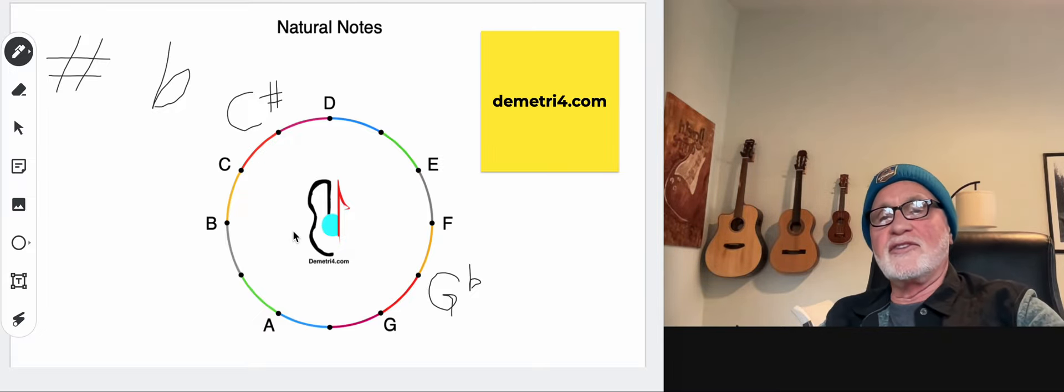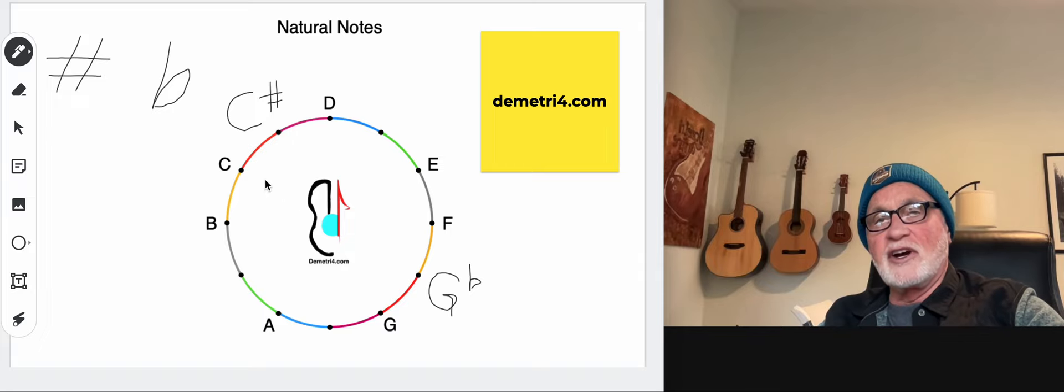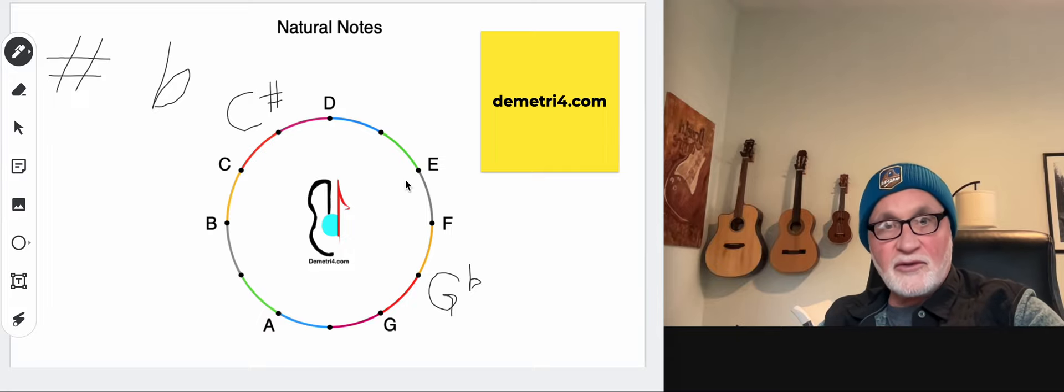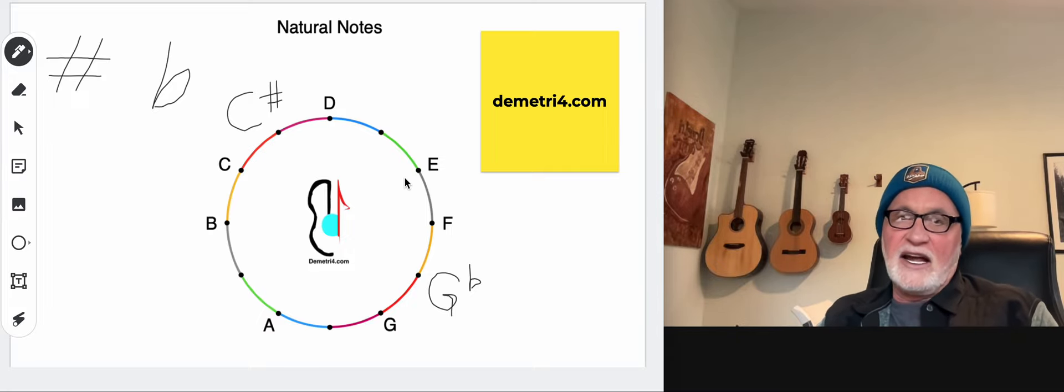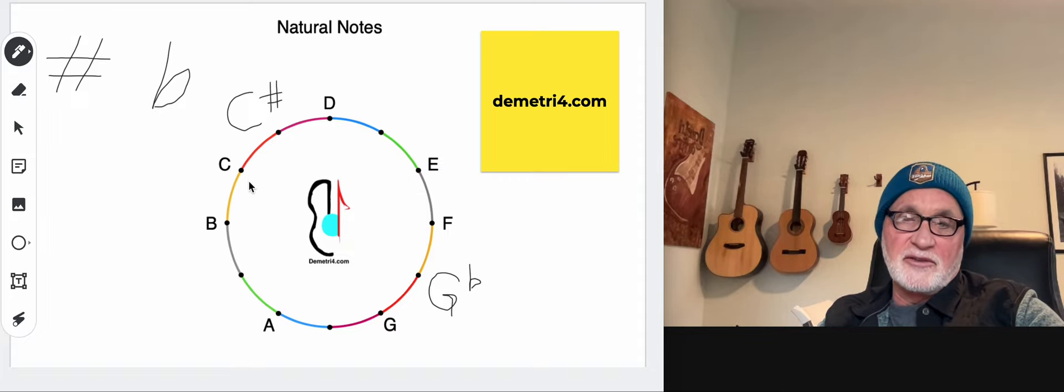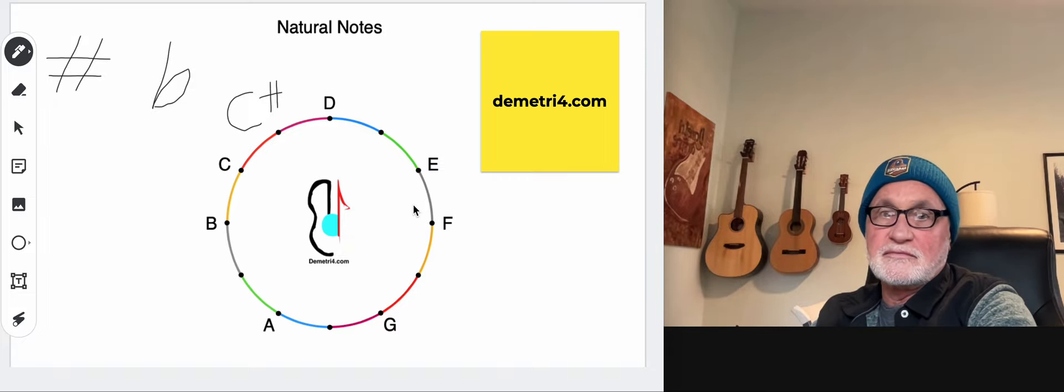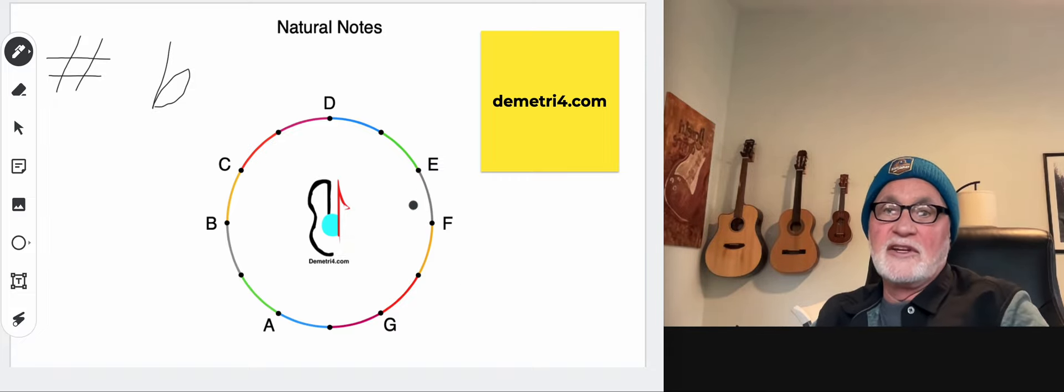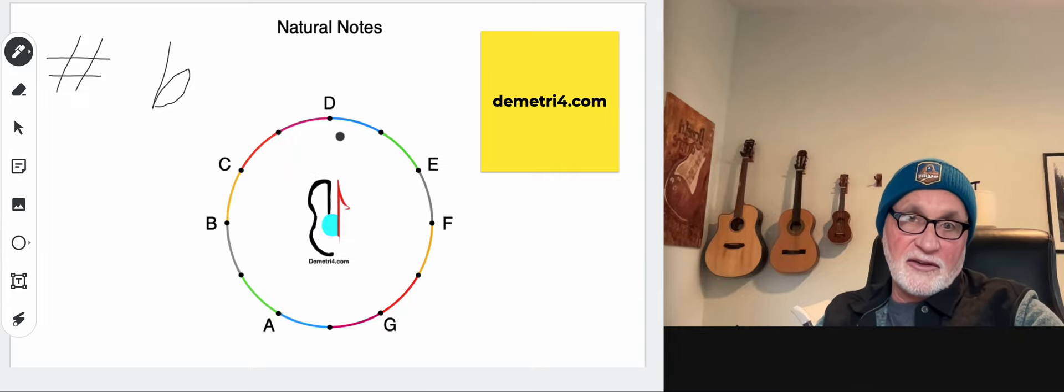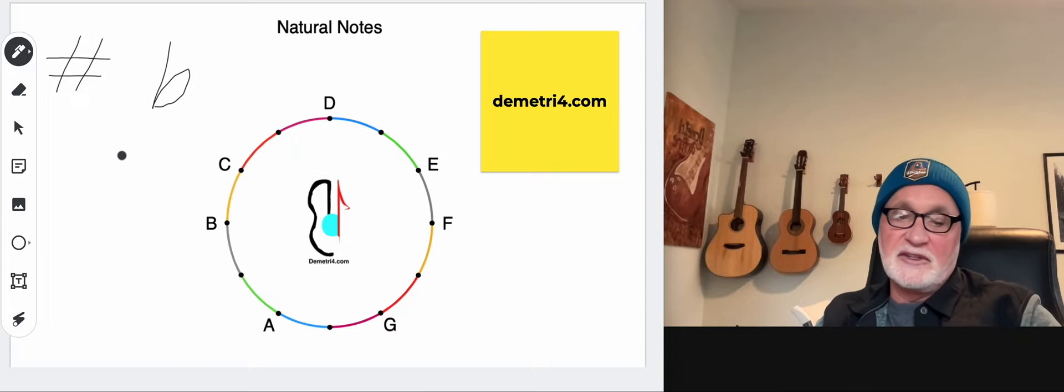A whole step is two dots. So this is something we talk about all the time. This is a whole step. From C to D is a whole step. Two dots. D to E is a whole step. Two dots. A half step is one dot. You can see some of these natural notes are one dot. B to C is one dot. E to F is one dot. So you can see that they're not all the same.